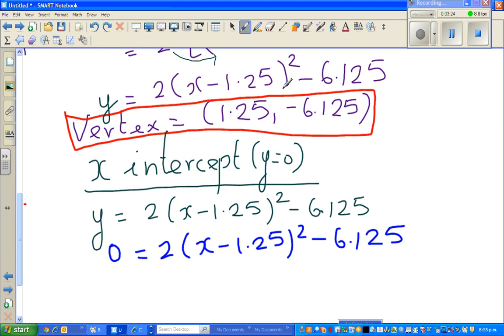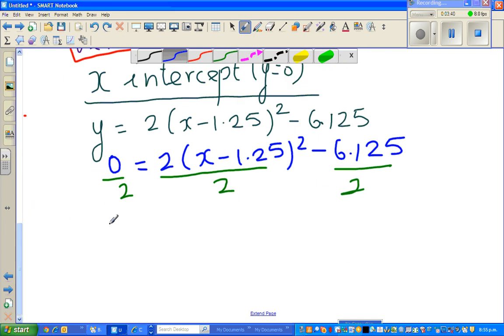Now the next step, I'm going to divide each of them by 2. So if I divide this by 2, I have to divide this by 2, and I also divide this by 2. So this is 0 divided by 2 is 0, is equal to